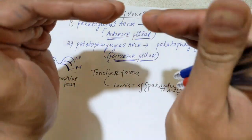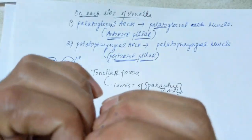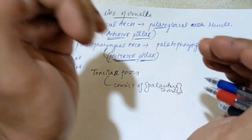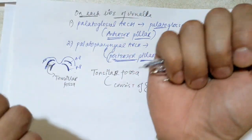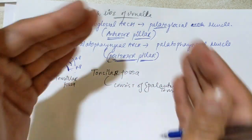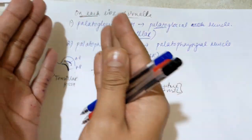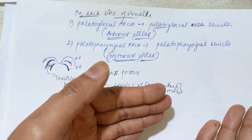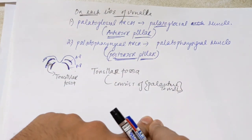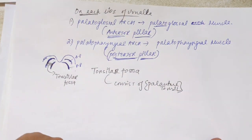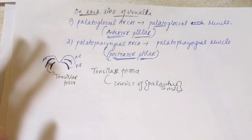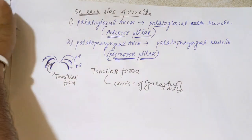These two arches are present on each side of the uvula — one from the anterior side and one from the posterior side. The posterior one is called palatopharyngeal because it attaches to the pharyngeal cavity, and the palatoglossal because it attaches to both the palate and the sides of the tongue. These are the extrinsic muscles of the soft palate, which we will discuss in the next video on muscles of the soft palate.